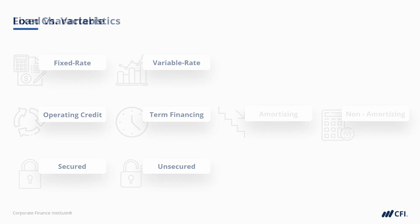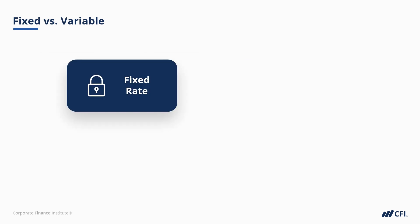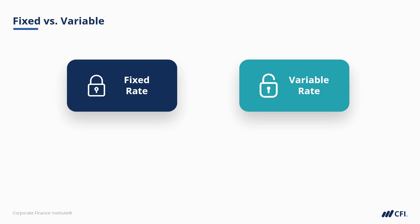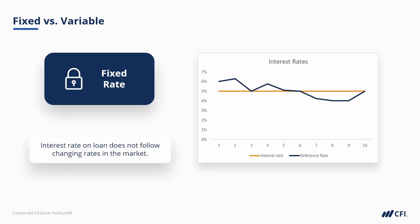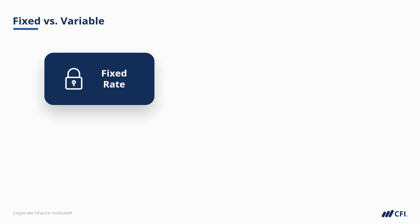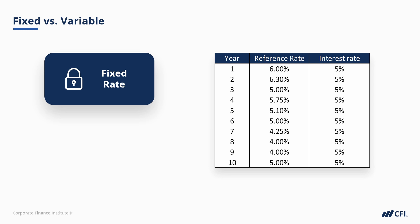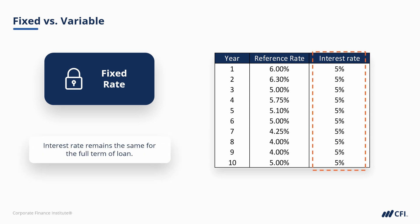Let's compare fixed rate and variable rate loans. With fixed rate loans, the interest rate remains the same over the loan term. With variable rate loans, the interest rates are set relative to a reference rate — often what's known as bank prime — which changes over time, informed largely by macroeconomic factors and central bank policy. Looking at the chart and table for a fixed rate loan example, you'll see that as the reference rate changes each year, the interest rate on this fixed rate loan remains exactly at 5%.